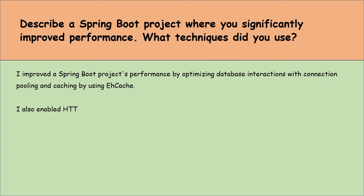Discuss the integration and use of distributed tracing in Spring Boot applications for monitoring and troubleshooting. Integrating distributed tracing in Spring Boot applications — like with Spring Cloud Sleuth or Zipkin — helps in monitoring and troubleshooting by providing insights into the application's behavior across different services. When a request travels across microservices, these tools assign and propagate unique IDs for the request, creating detailed traces of its journey. This makes it easier to understand the flow, pinpoint delays and identify errors in complex distributed environments. By visualizing how requests move across services, we can optimize performance and quickly resolve issues, enhancing reliability and user experience in microservice architecture.